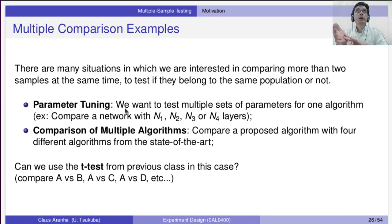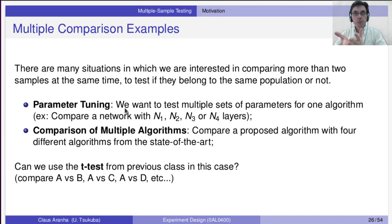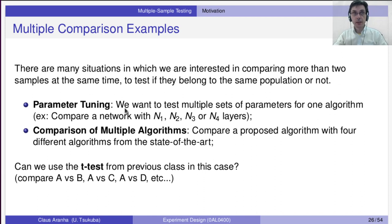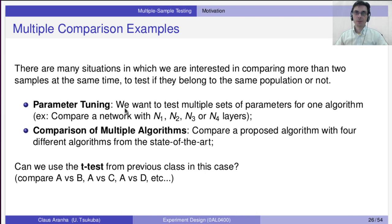There are many situations in which we are interested in comparing more than two samples at the same time — to test if they belong to the same population or not. For example, parameter tuning: if we have an algorithm and want to test multiple sets of parameters, such as networks with N1, N2, N3, or N4 layers. Another case is when we want to compare multiple algorithms — A, B, C, and D — instead of just two.